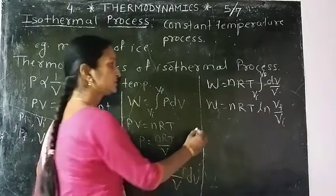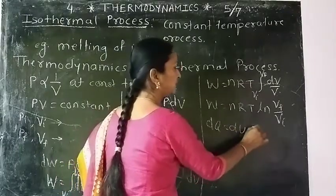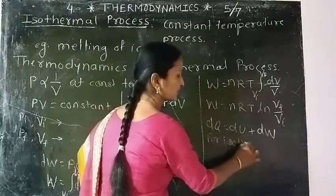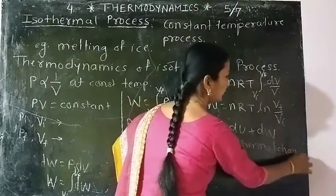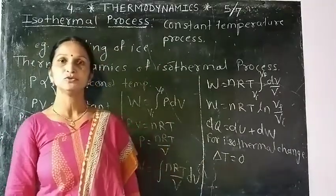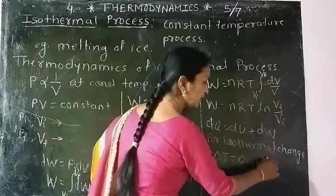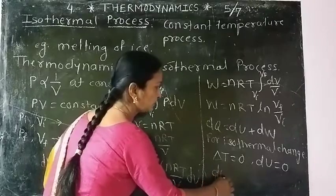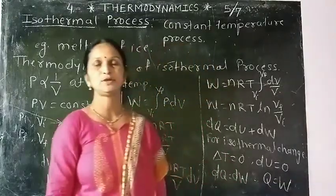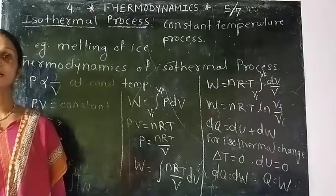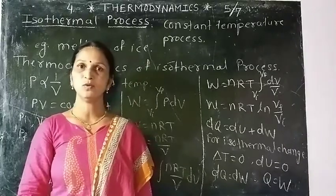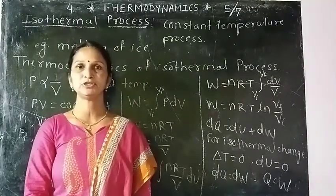According to the first law of thermodynamics, dQ = dU + dW. For an isothermal change, temperature is constant, so delta T = 0. As delta T = 0, the change in internal energy is also zero. Therefore dQ = dW, or Q = W. When gas expands, work done is positive and heat is absorbed by the system. When gas is compressed, work done is negative and heat energy is released.